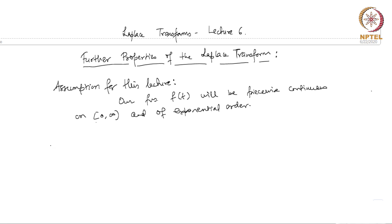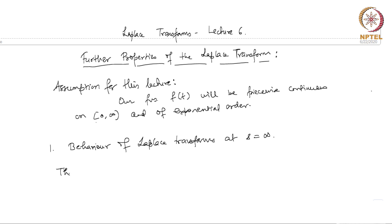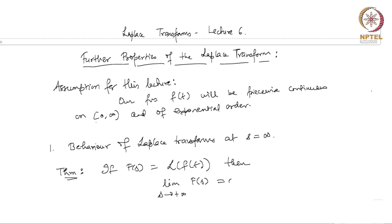Let us see our first property: the behavior of Laplace transforms at s equal to infinity. This is a theorem: if we write F(s) to be the Laplace transform of the function f(t), then the limit as s goes to plus infinity of F(s) is 0.